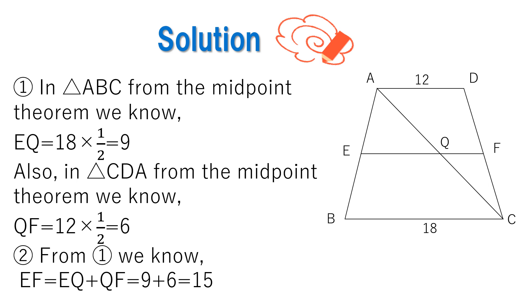For number two, the length of EF is found by EF equals EQ plus QF. From problem one, we know EQ equals 9 and QF equals 6. So we have EF equals 9 plus 6 which equals 15.